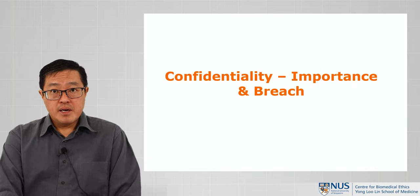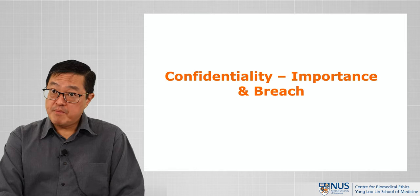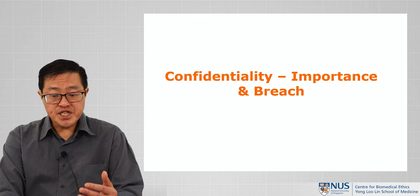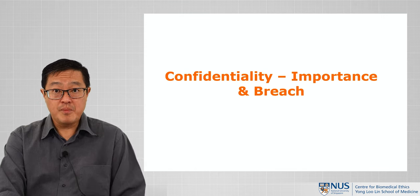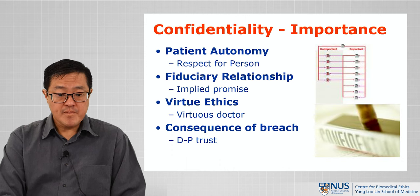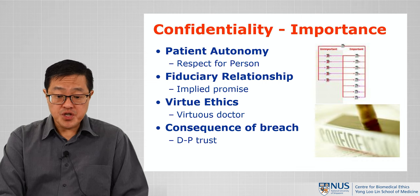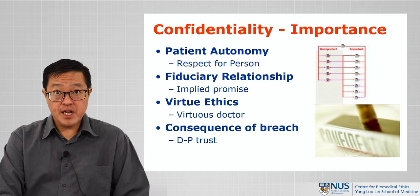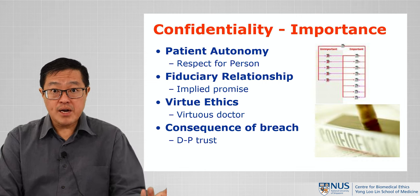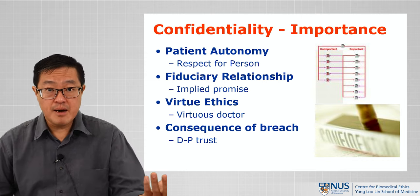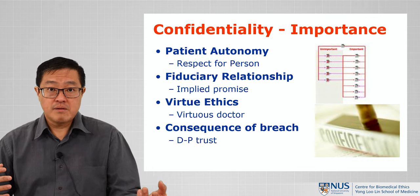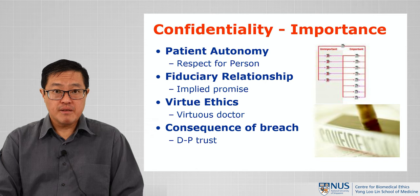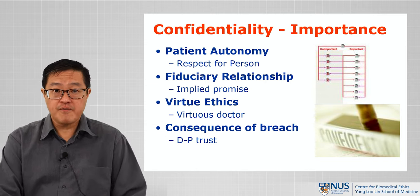What I'll touch upon now is confidentiality, its importance, and a brief outline of the principles around when it can and must be breached. Confidentiality relates to patient autonomy, respect for the person, and the fiduciary relationship. Fiduciary means one party is in a position of power relative to the other — the doctor holds power over the patient, and the law expects that this power is not misused or abused. Part of that is the implied promise to respect the confidentiality of information given to us.